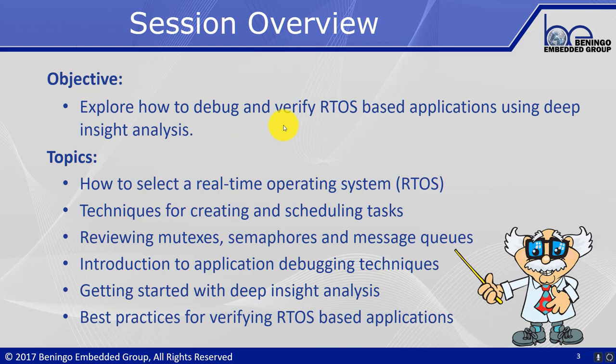In today's session we're going to explore how to debug and verify RTOS based applications using deep insight analysis. I'll start with a review of how to select a real-time operating system by analyzing the software itself. We'll look at techniques for creating and scheduling tasks, including rate monotonic analysis, and review basic RTOS features such as mutexes, semaphores, and message queues. Then we'll cover application debugging using application tracing, deep insight analysis for timing verification, application profiling, and best practices for verifying RTOS based applications.